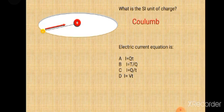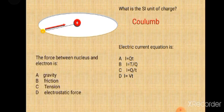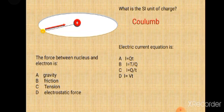What is the SI unit of charge? That is coulomb. Electric current equation is I = Q/T. What is the force between the nucleus and the electron? That is the electrostatic force of attraction — the nucleus attracts the electron and binds it, causing it to revolve around the nucleus.